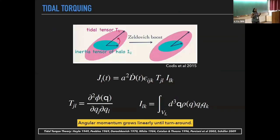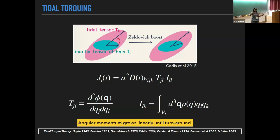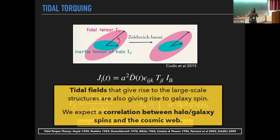The same tidal fields that collapse structures to form the cosmic web are also torquing up the halos and proto-halos forming within them. Very naively, if you have a halo or proto-halo which is non-spherical and has an inertia tensor misaligned with the surrounding tidal field, this misalignment gives a torque to the halo and it starts spinning up. So the same tidal fields causing these structures are also torquing up halos.